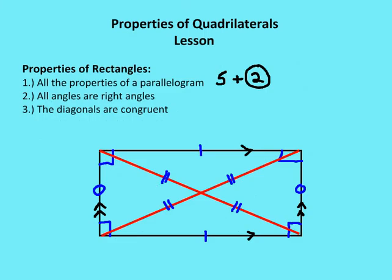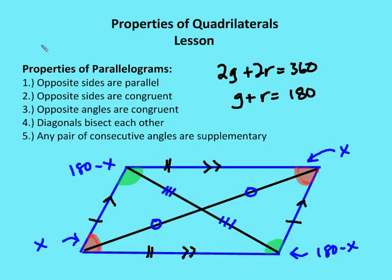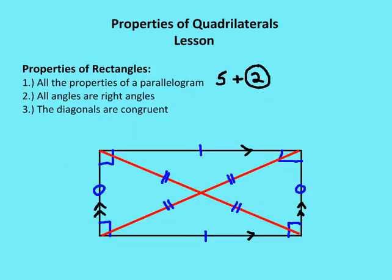Let's talk about the properties of rectangles. I like to memorize the properties of parallelograms by number — I've got five of them. For rectangles, I have all five properties of a parallelogram, plus two more: all the angles are right angles, and the diagonals are congruent. I've marked all the angles in blue — they're all right angles — and the two diagonals in red are congruent.